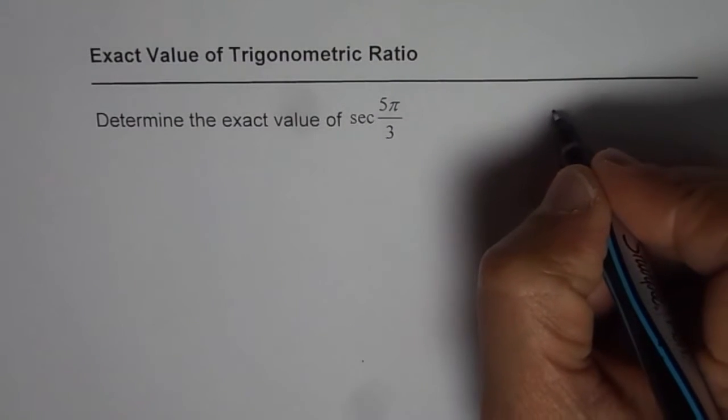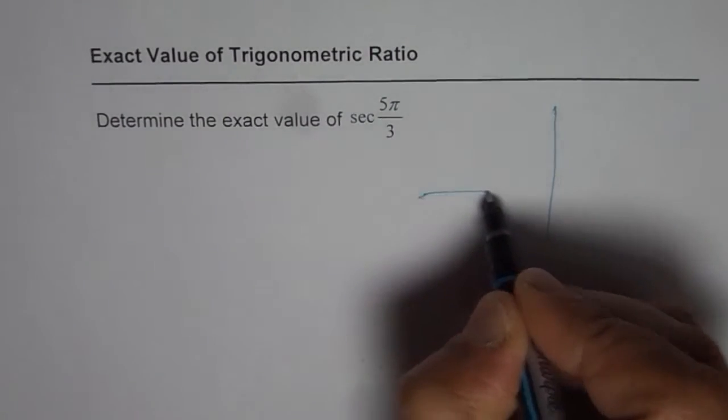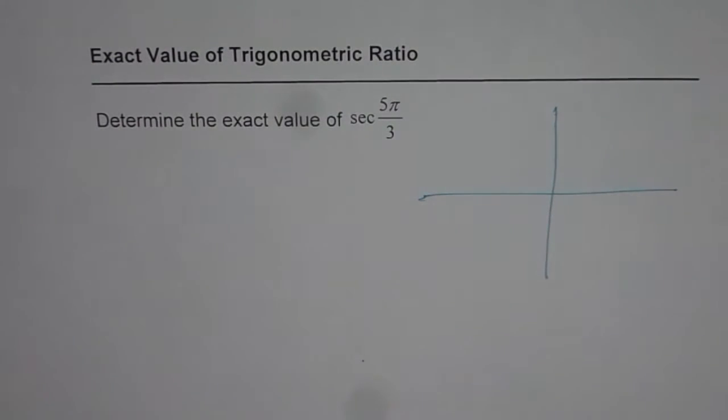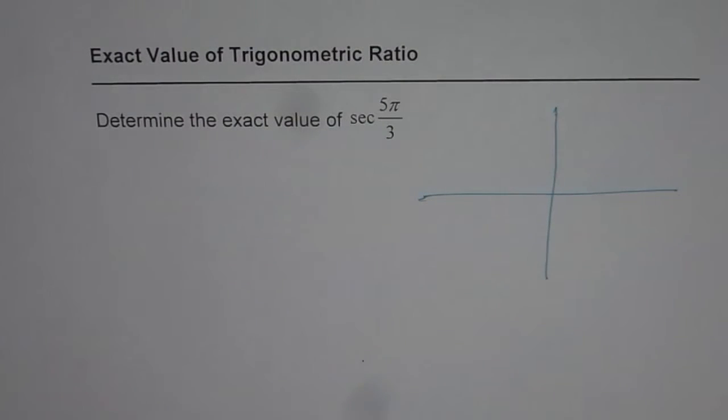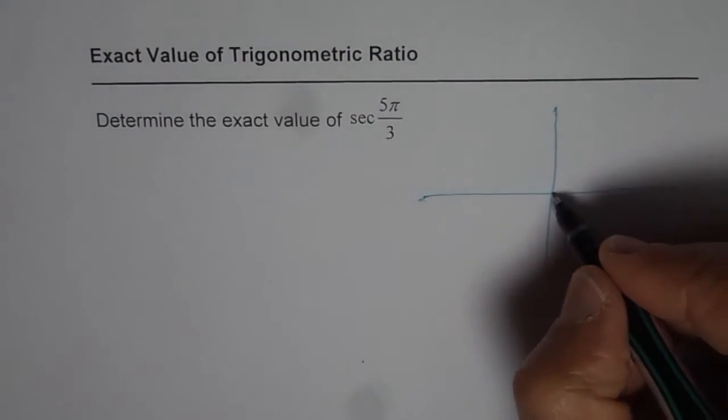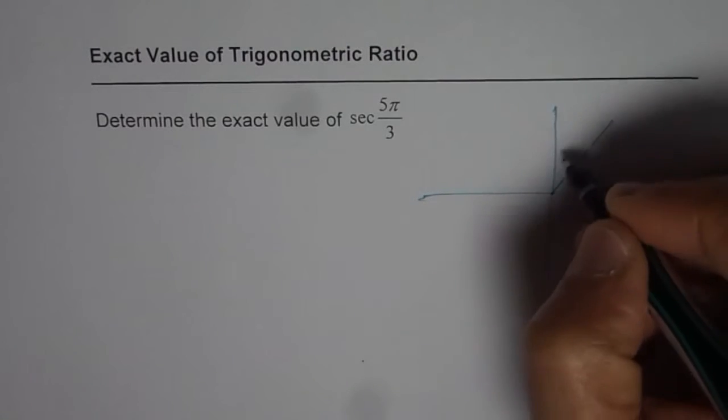Now let's first sketch this angle so that we understand what is the related acute angle. When we say 5 pi by 3 that means pi is divided into 3 equal parts. 2 pi will be divided into 6 parts. So we have these 3 equal parts.